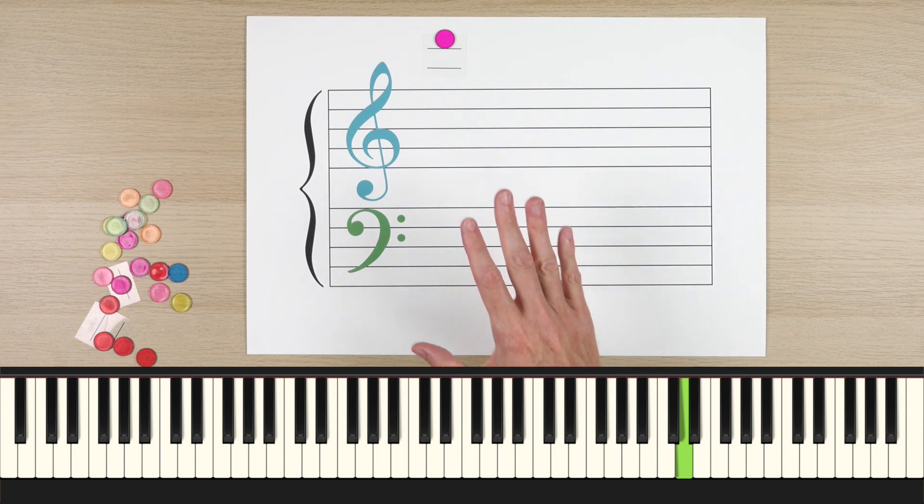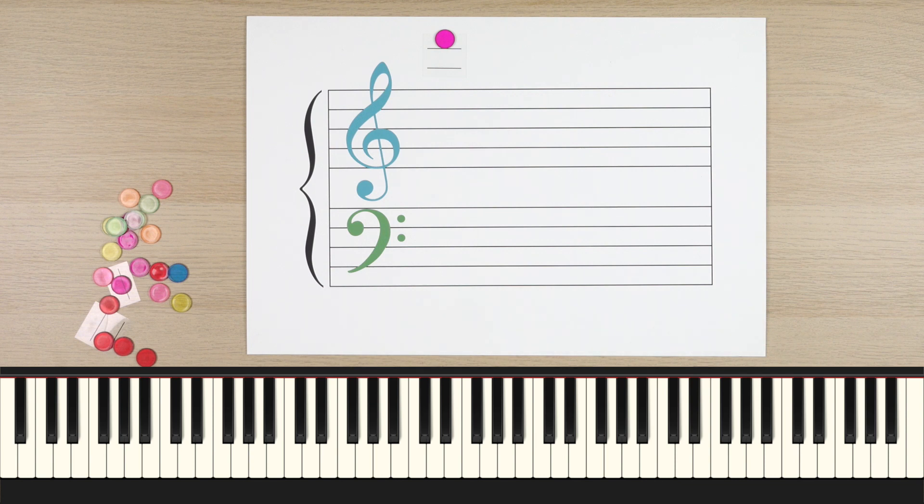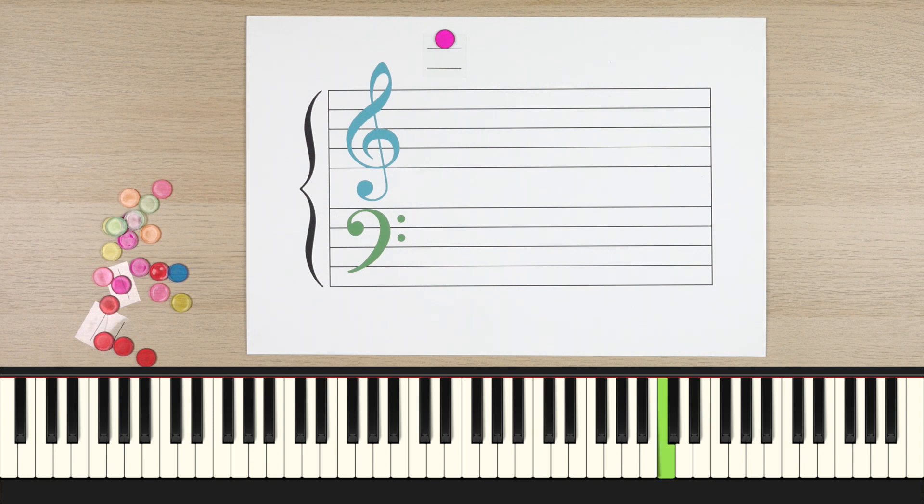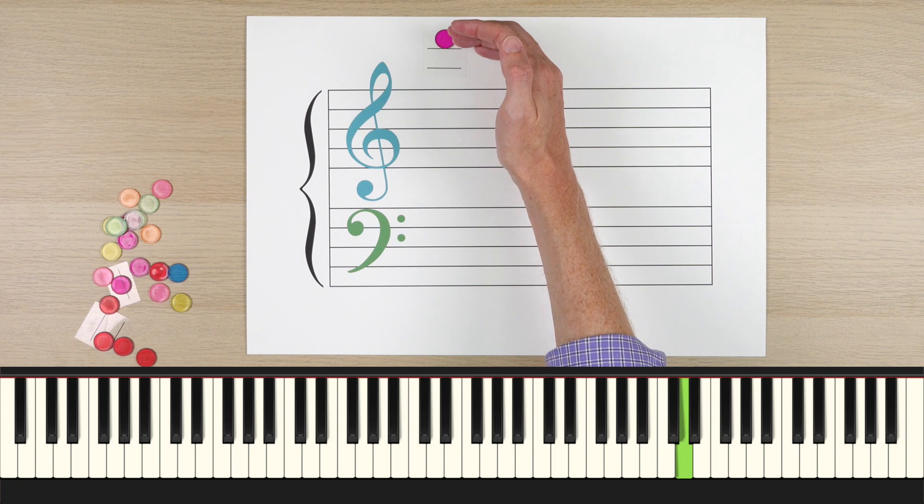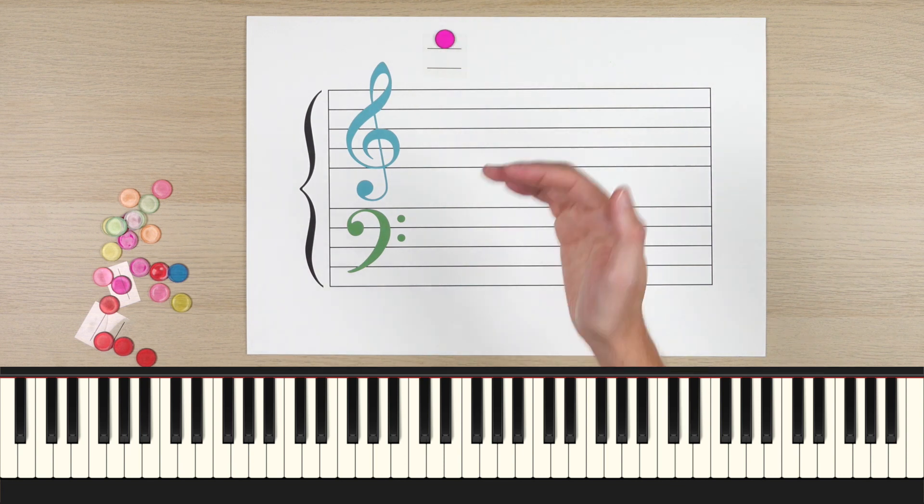As you get to more advanced music, I want you to be really careful about the octave you're playing. Remember, it matters which D. There's a D here, here, here, right? How do you know which is the correct D? Well, guide notes can help you. You have to remember where middle C is, where treble C is, where high C is, and then use that to figure out the correct octave, or which D you should be actually playing.